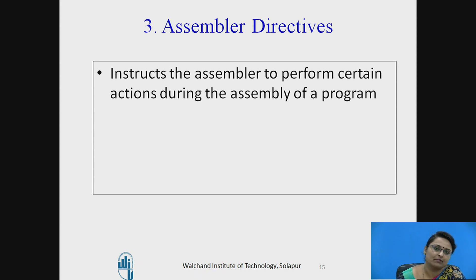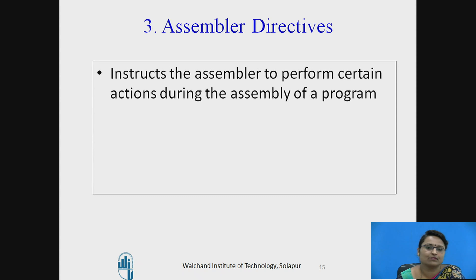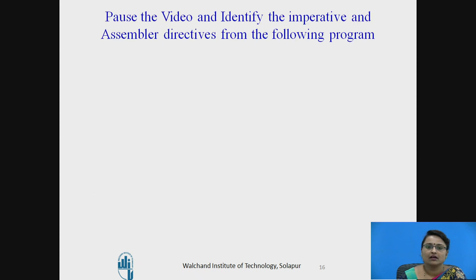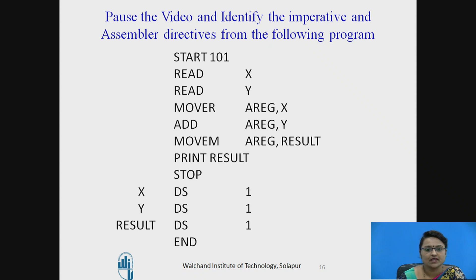The third type is assembler directives, which instruct the assembler to perform certain actions during the assembly of a program. These are not used for execution — they are used only by the assembler. Examples include START and END, used to start and end the execution. Now pause the video and identify the imperative and assembler directive statements in the given program.